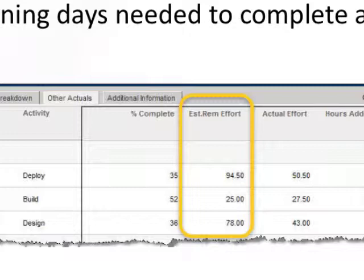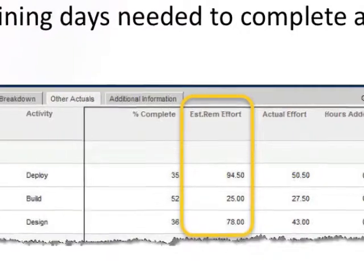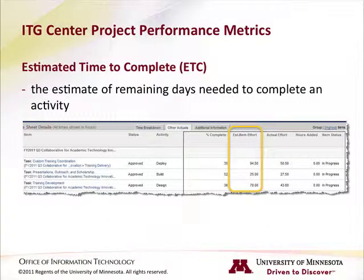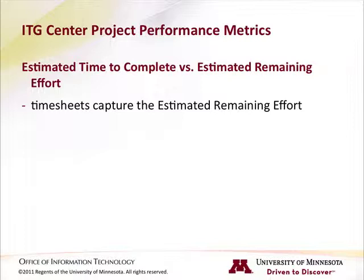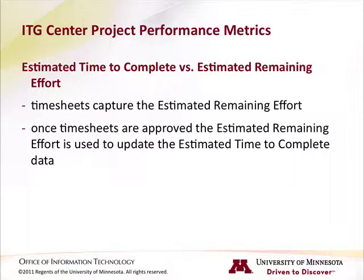If the original estimate for the task is found to be inaccurate — either more time is needed or less — some additional explanation is needed here, because in the timesheets, project participants are asked to update the estimated remaining effort for each task. However, the metric reported in the metrics portlet is the estimated time to complete. The timesheet captures the estimated remaining effort as updated by project participants and reviewed by their managers. Once the timesheet is approved, the estimated remaining effort is used to update the estimated time to complete data that is reported in the metrics portlet.